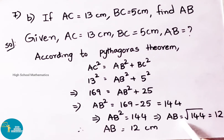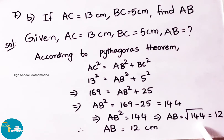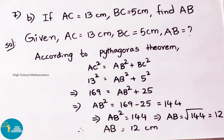That implies AB equals to square root of 144, so its value is 12. Therefore AB value is 12 centimeter.